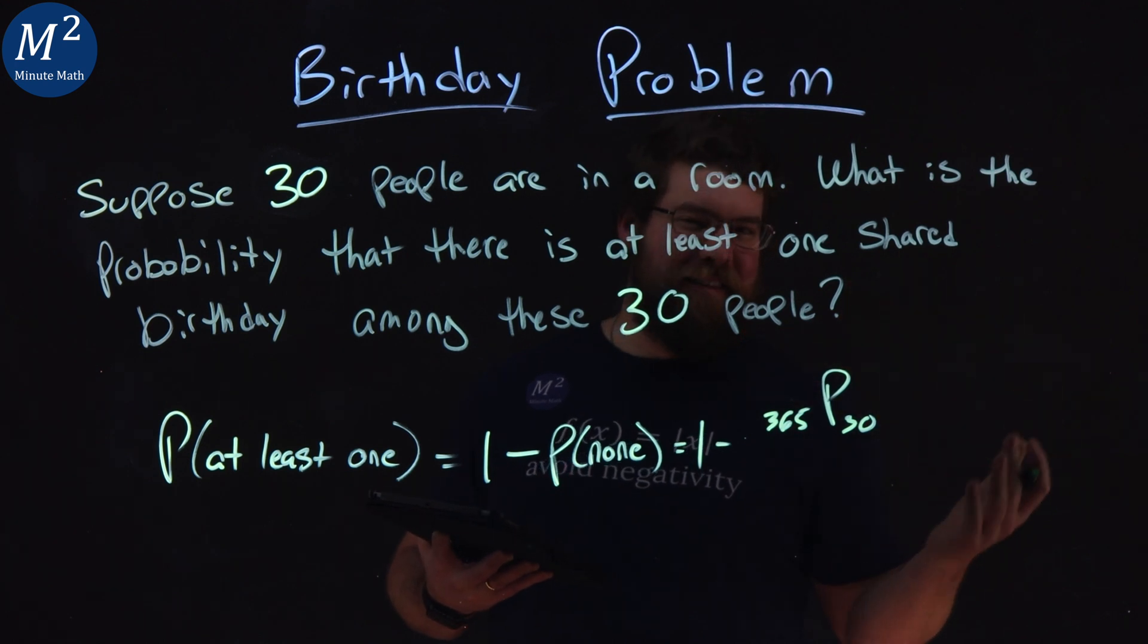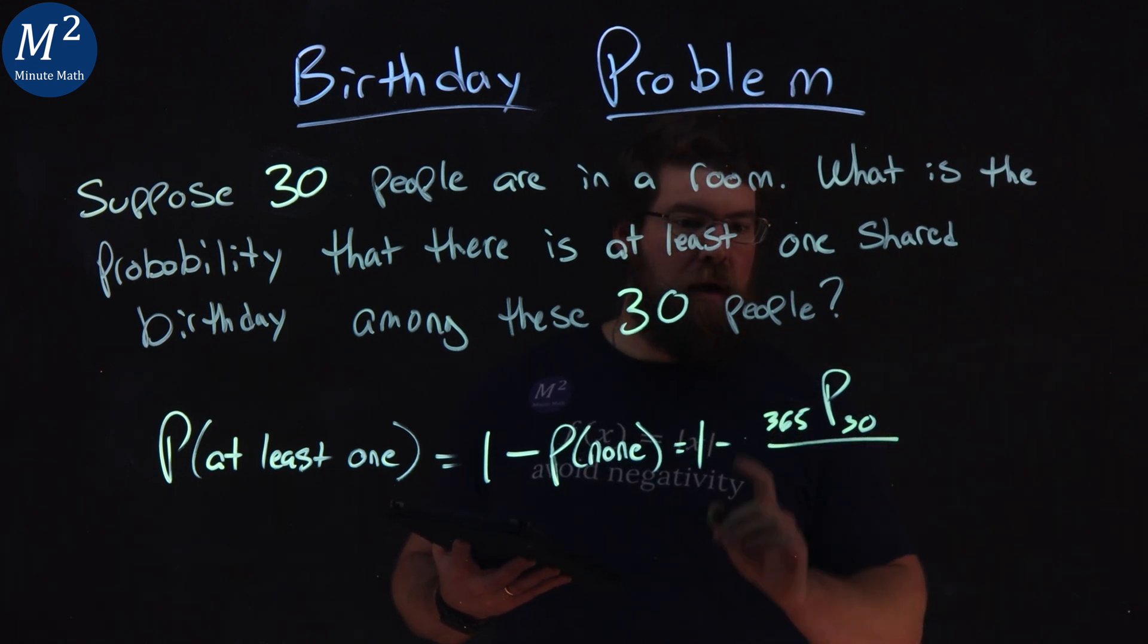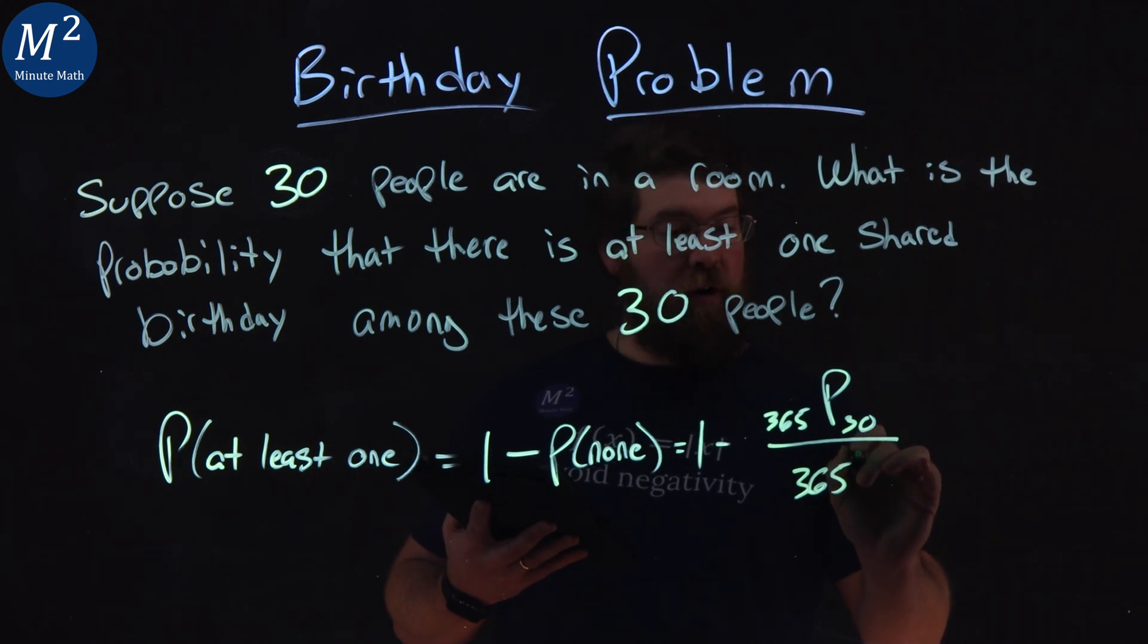365, 364, 363, et cetera, over a total of 365 days to the 30th power.